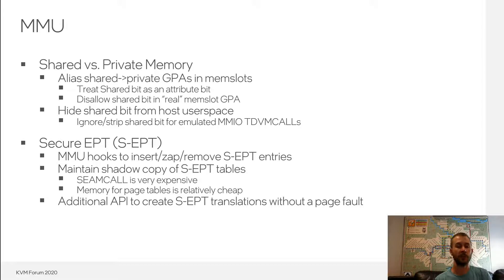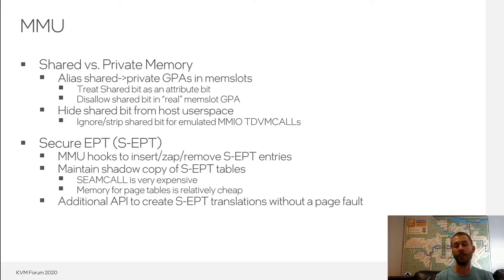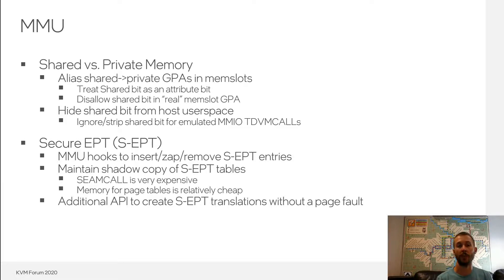Secure EPT also needs an additional API from the MMU to allow adding translations without a page fault. This is necessary because the only way to load non-zero memory into a guest private memory space — i.e., load the initial memory image — can only be done before vCPUs are runnable. And to load non-zero memory, the secure EPT translations for the associated guest private memory must be in place. So long story short, we have to have the secure EPT translations before we can run vCPUs, which conflicts with KVM's existing model of populating EPT tables on demand in response to page faults from the guest.